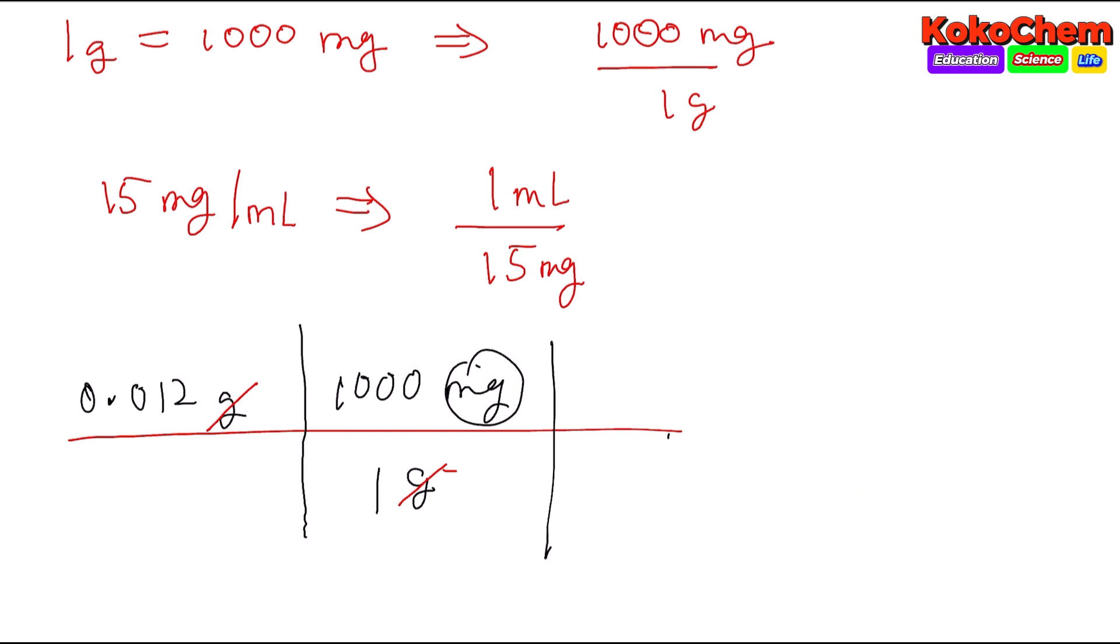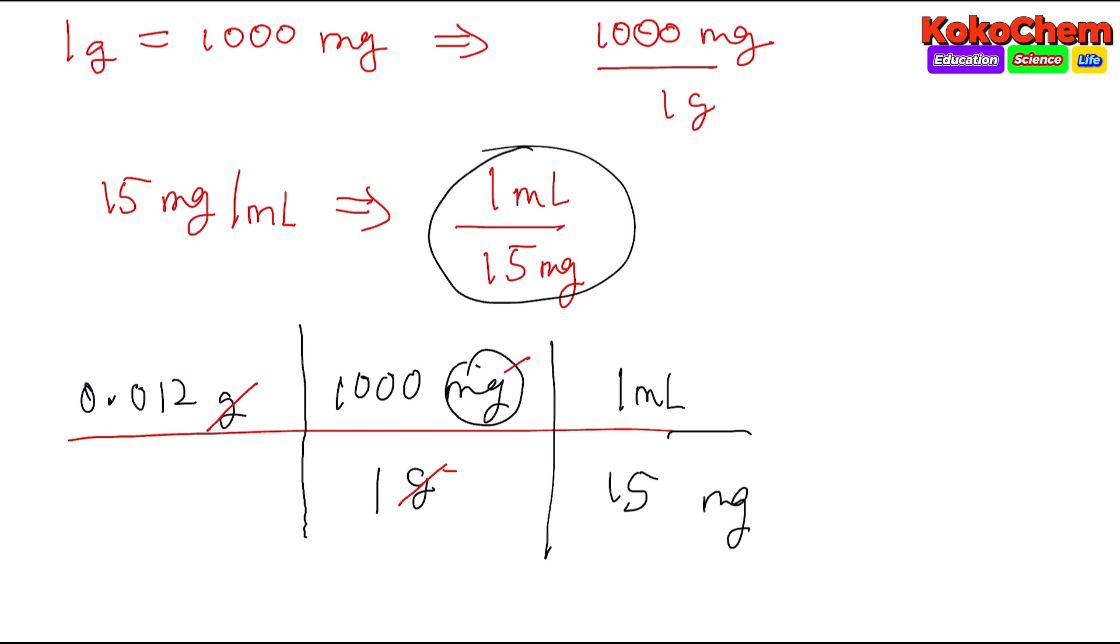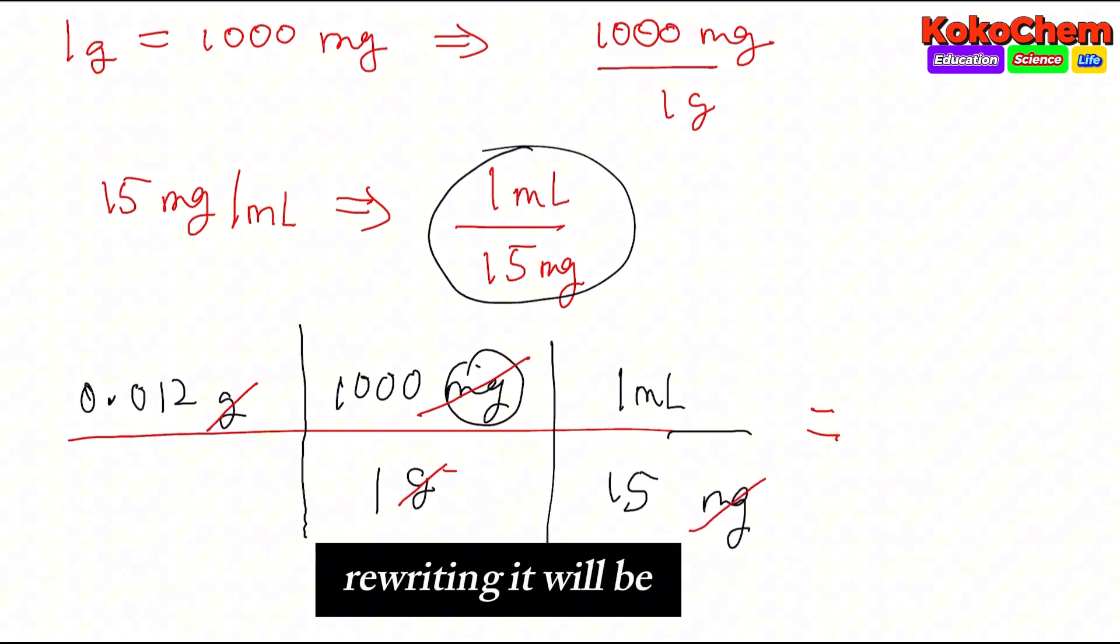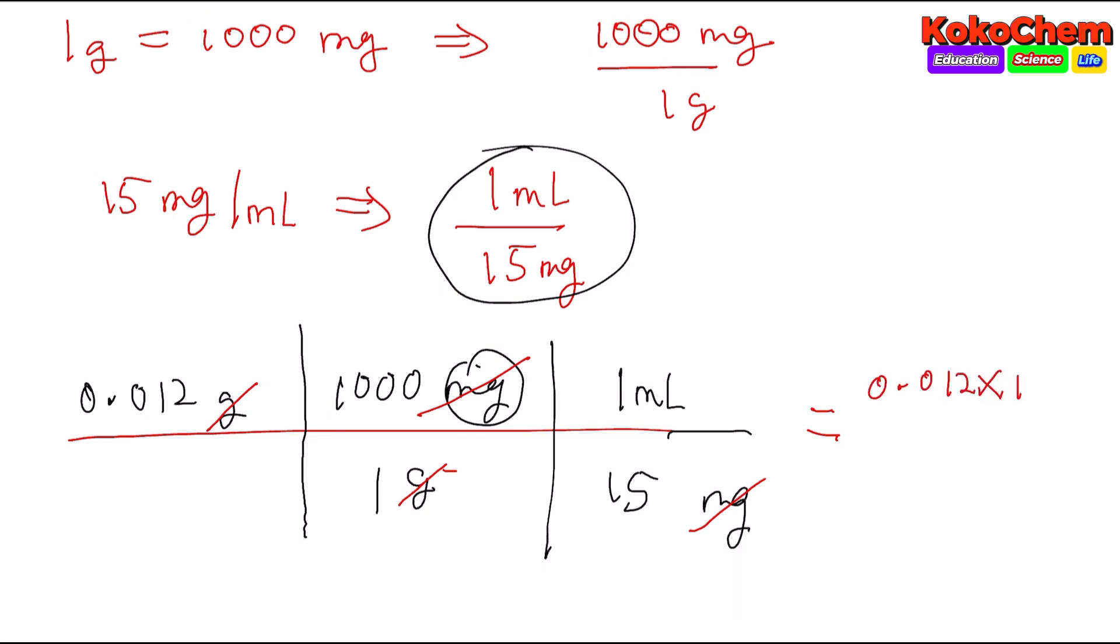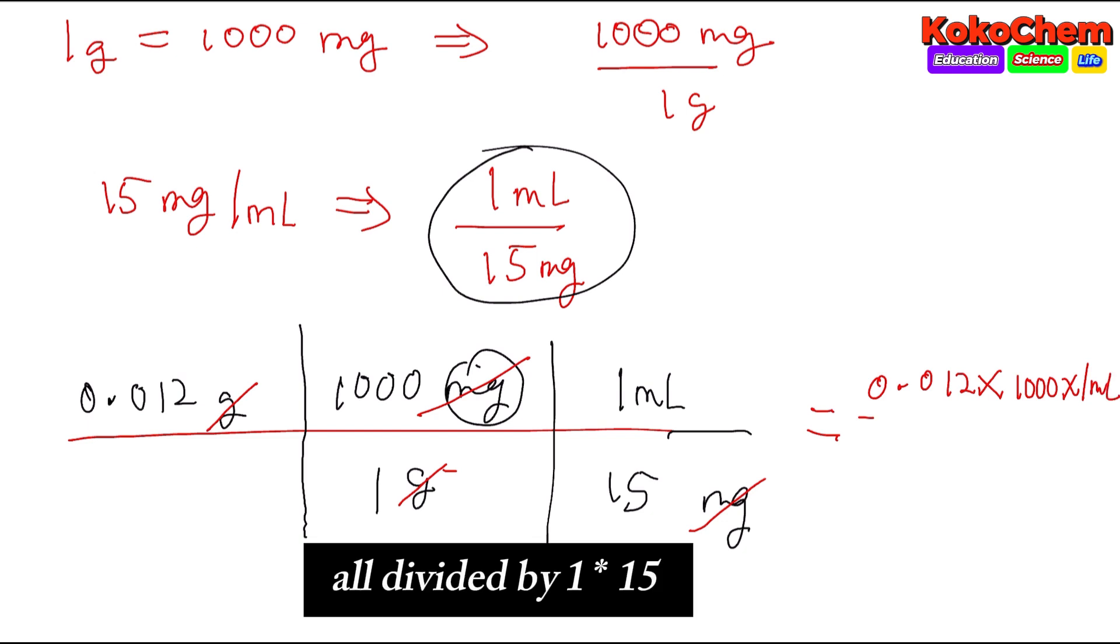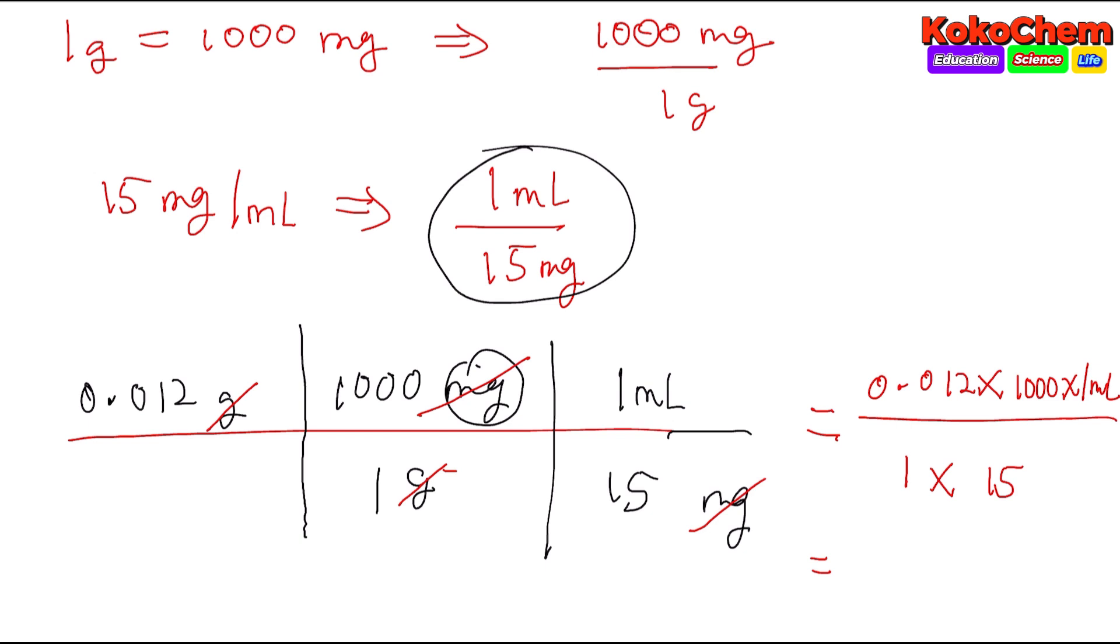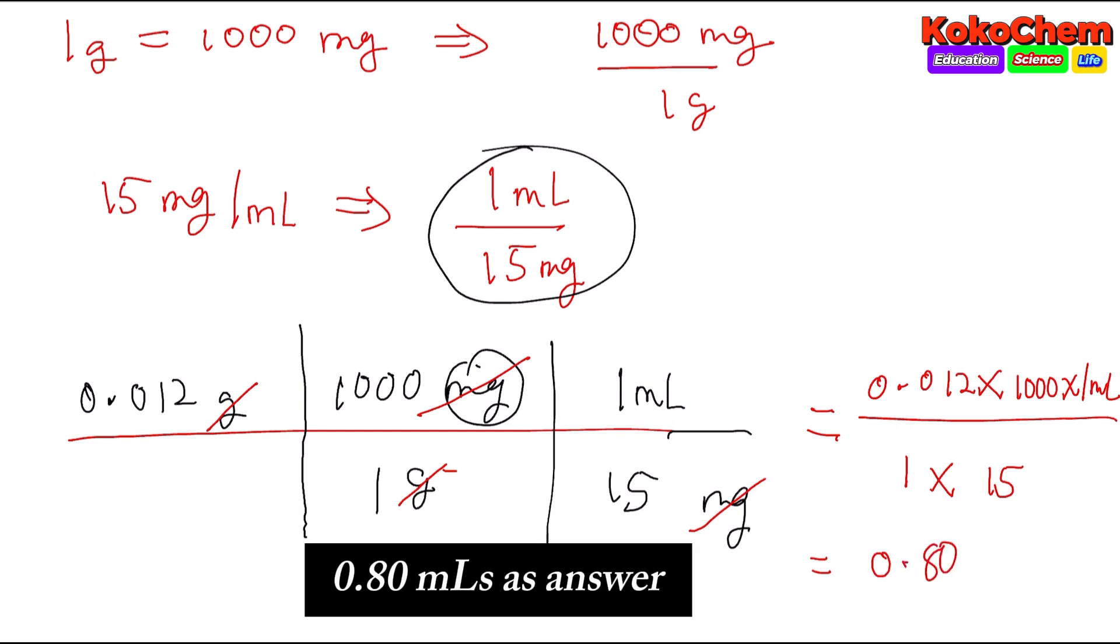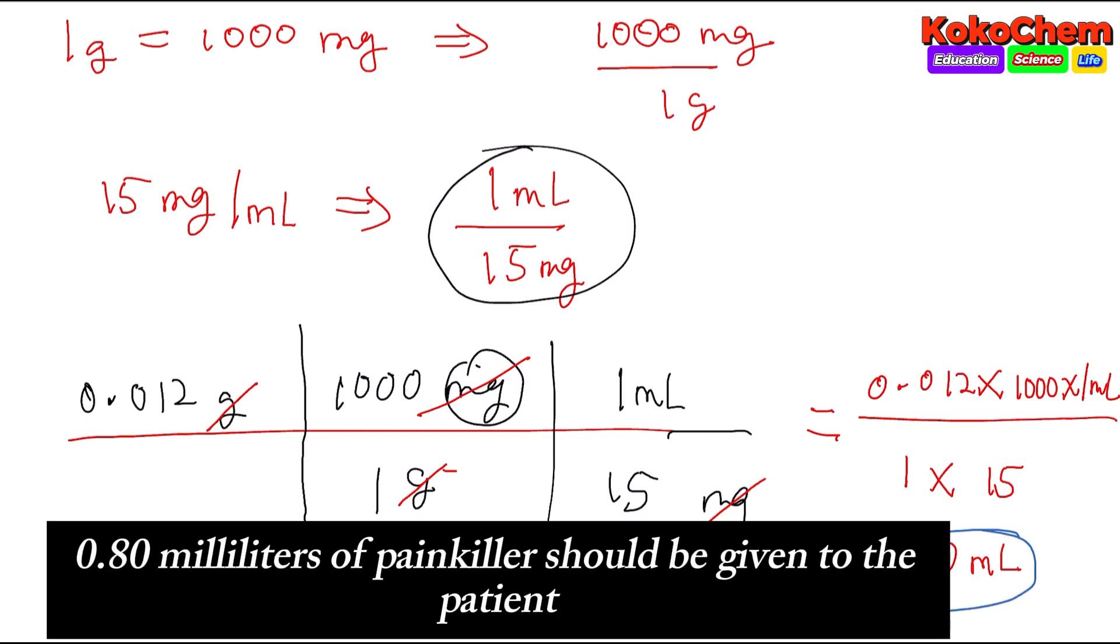We use one milliliter equals 15 milligrams, so the milligram on top will cancel the milligram at the bottom. Your calculation is 0.012 times one thousand times one ml divided by one times 15. The answer is 0.80 milliliters of painkiller should be given to the patient.